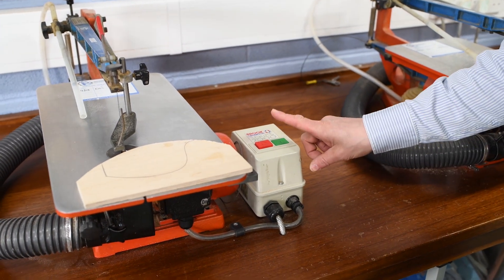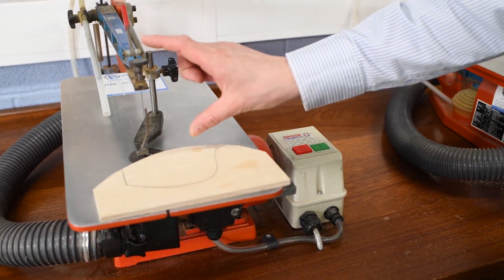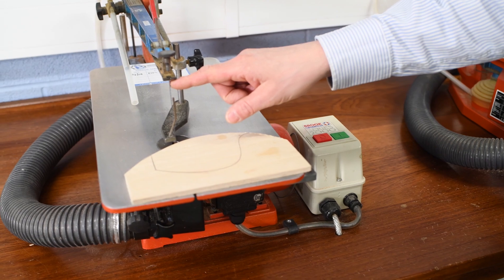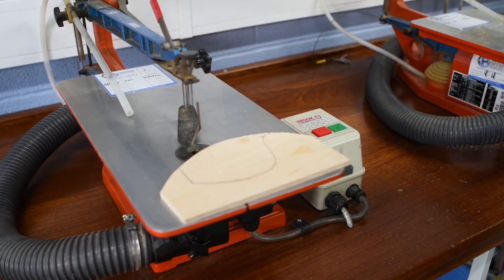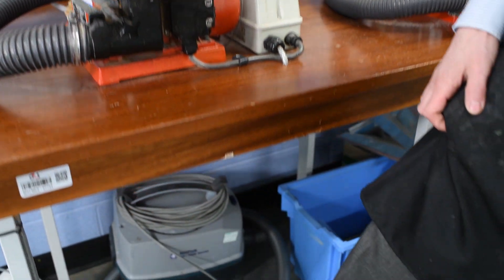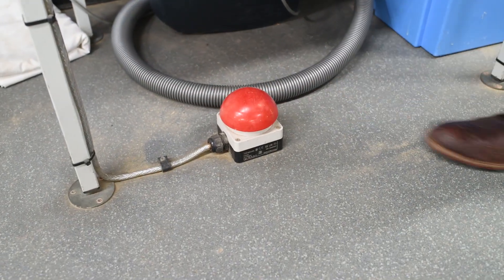To turn the machine on, you simply press the green button down and that will start the reciprocating motion of the blades. To turn the machine off, you simply press the red button or you use the foot pedal to turn the machine off on the floor.